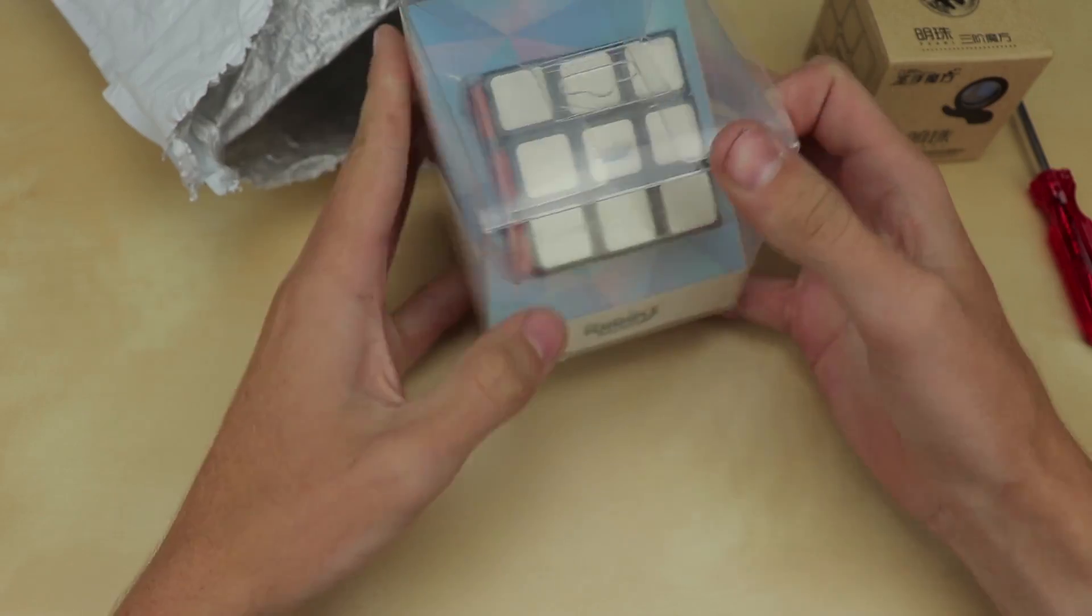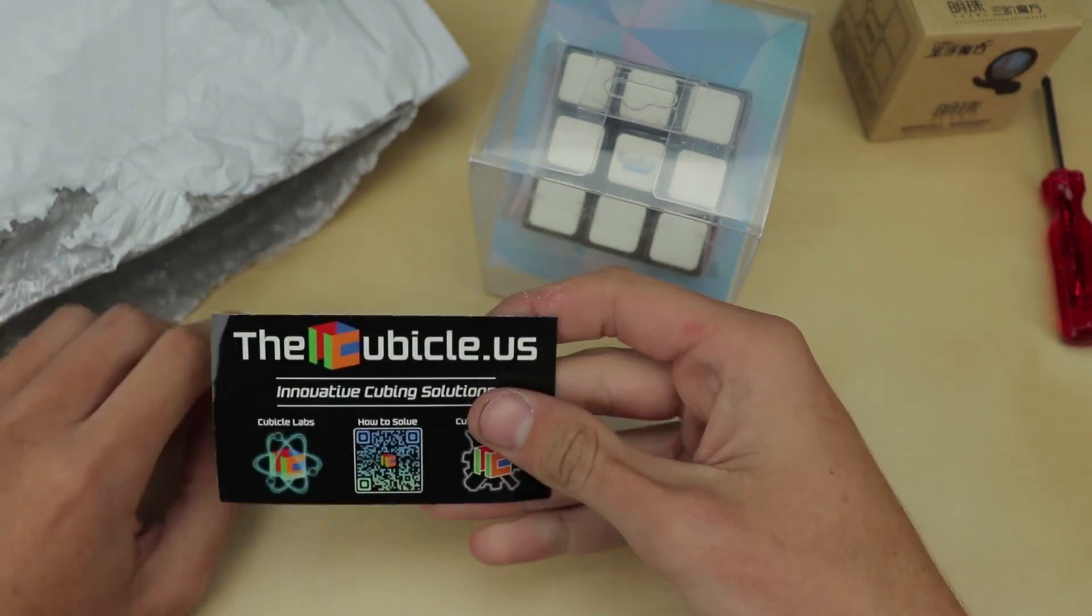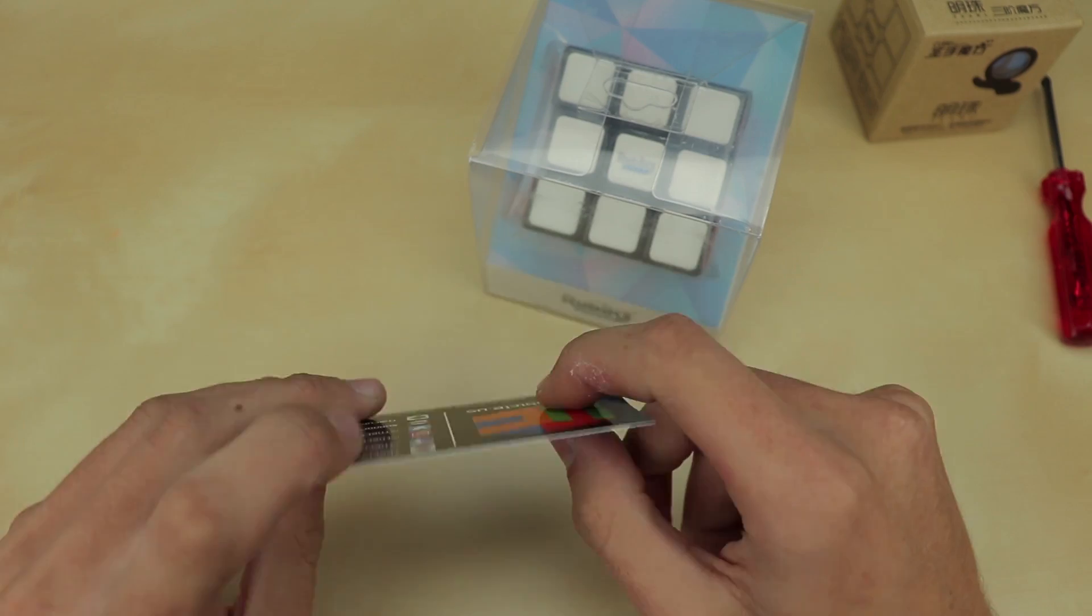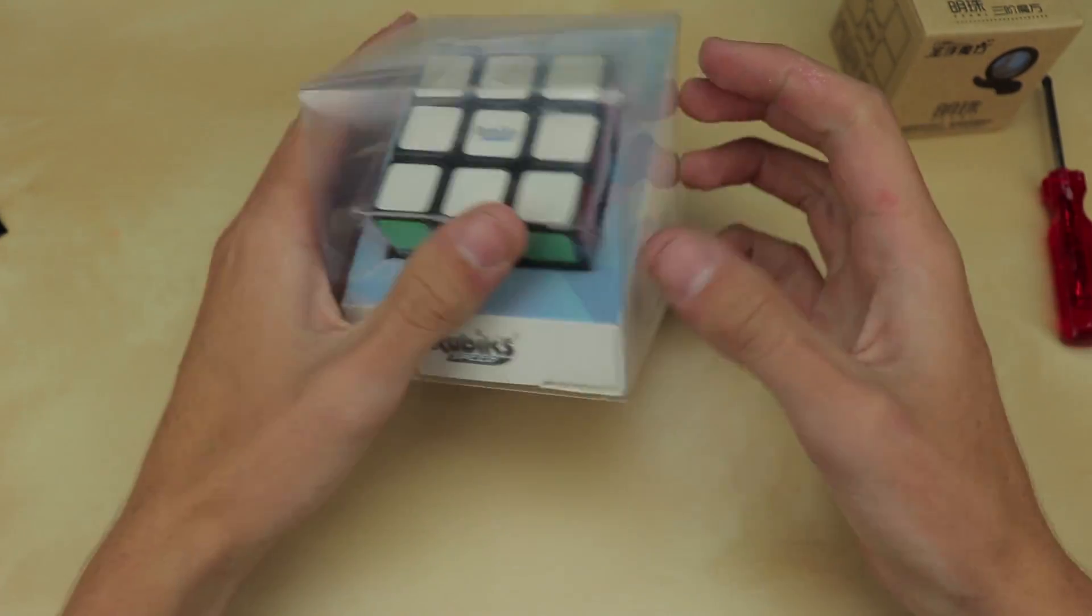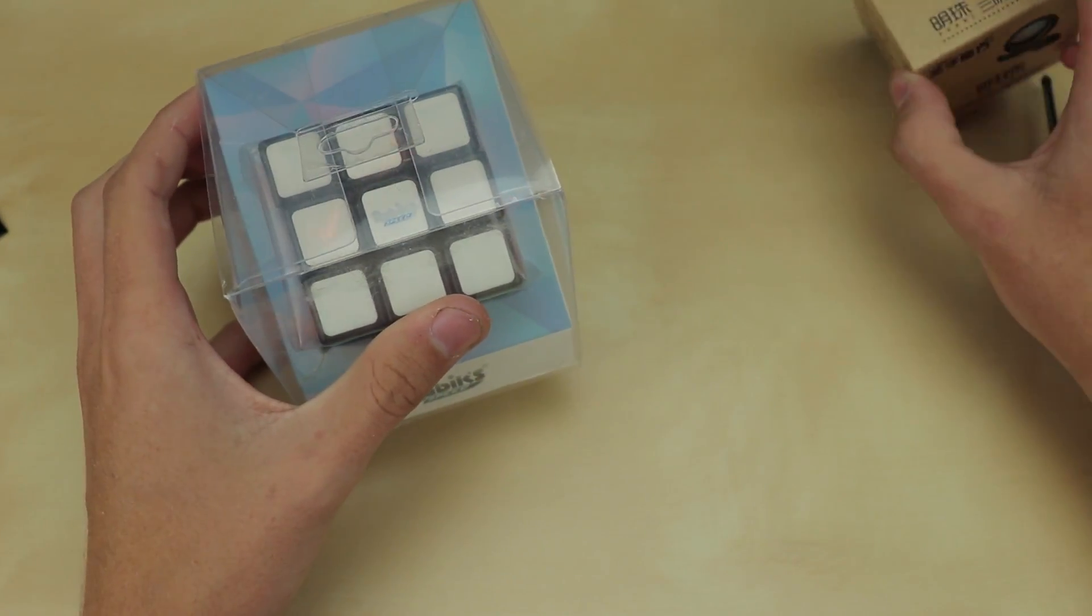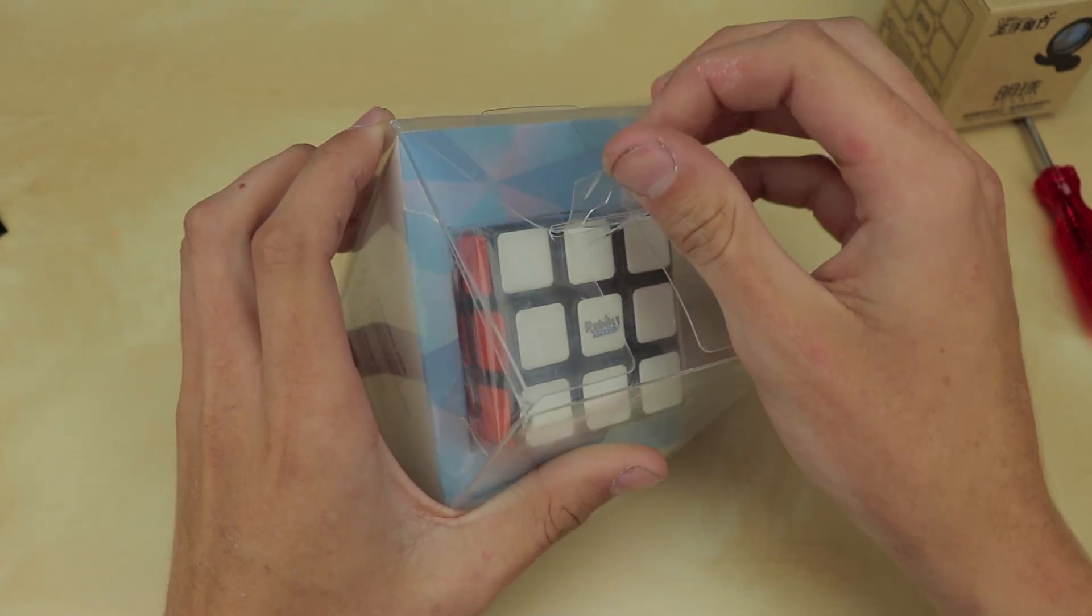That's interesting. And it looks like the only other thing left in this package here is their business card, cubicle.us, Innovative Cubing Solutions. So that's pretty cool. So yeah, I already have this cube, and I'm pretty sure I already have this cube, so I'm kind of confused about that.